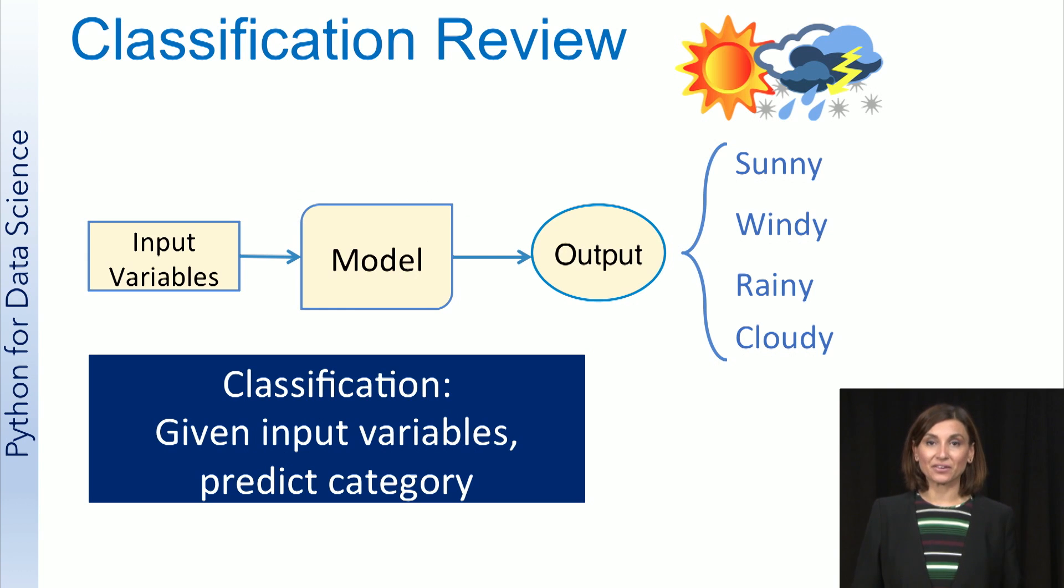Before we talk about regression, let's review classification again. In a classification problem, the input data is presented to the machine learning model, and the task is to predict the target corresponding to the input data. The target is a categorical variable, so the classification task is to predict the category, or the label, of the target given the input data.